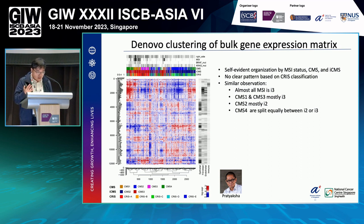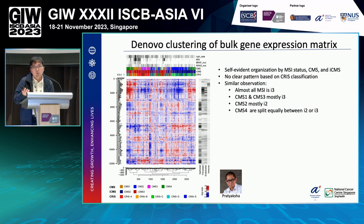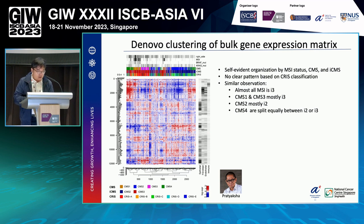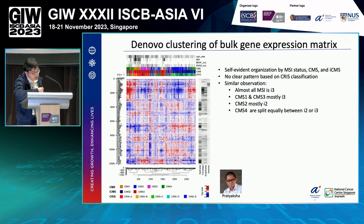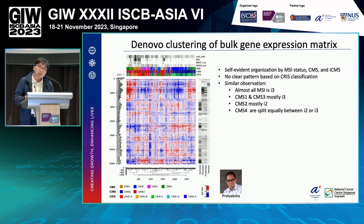Next, we combined the bulk transcriptomic data into a single gene expression matrix and performed de novo clustering — with no prior knowledge from our marker genes. We found a self-evident organization based on MSI status, CMS classification, and ICMS classification, suggesting that ICMS may indeed provide the underlying structure to the molecular classification of CRC. Unfortunately, we could not find a clear pattern for the CRIS classification. We also observed that most MSI tumors are immune-infiltrated, while CMS4 is mostly fibrotic, indicated by genes expressed by fibroblasts and endothelial cells.